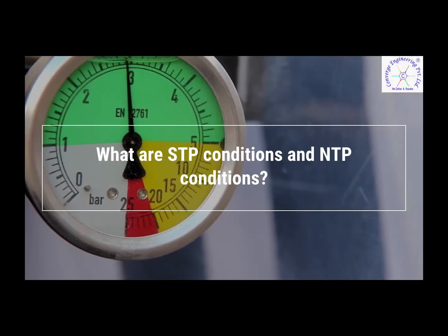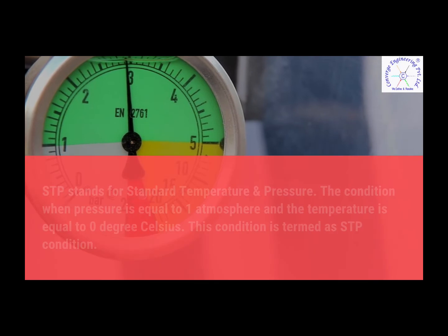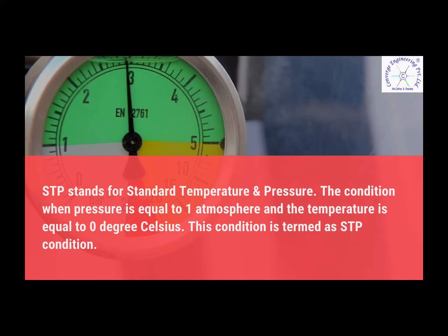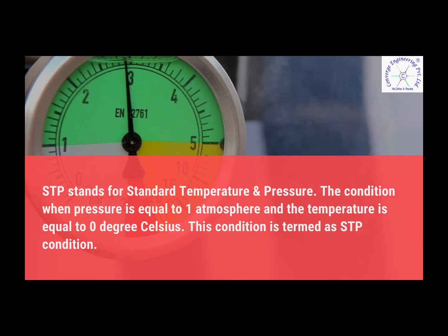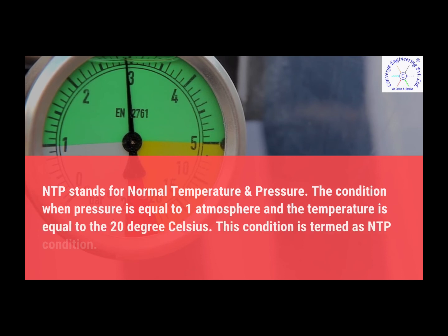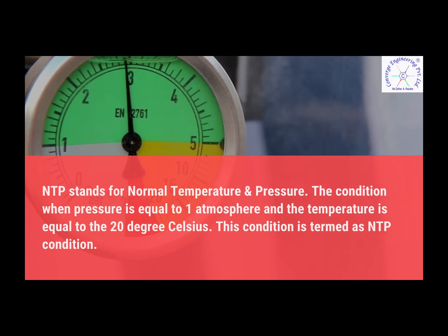What are STP conditions and NTP conditions? STP stands for Standard Temperature and Pressure — the condition when pressure equals 1 atmosphere and temperature equals 0 degrees Celsius. NTP stands for Normal Temperature and Pressure — the condition when pressure equals 1 atmosphere and temperature equals 20 degrees Celsius.